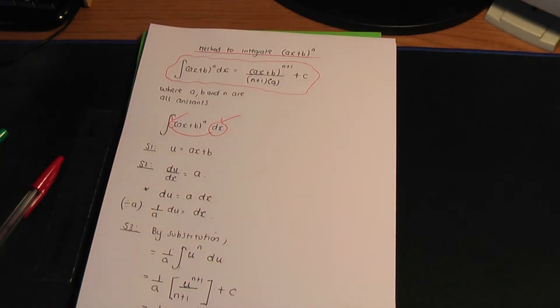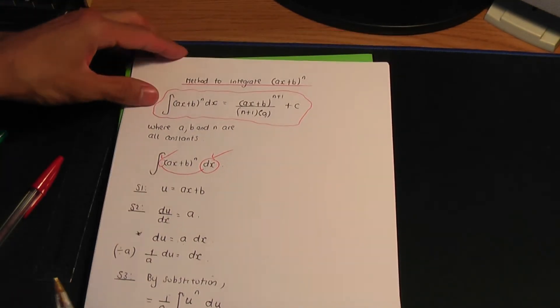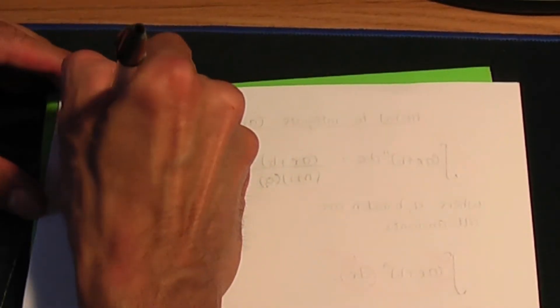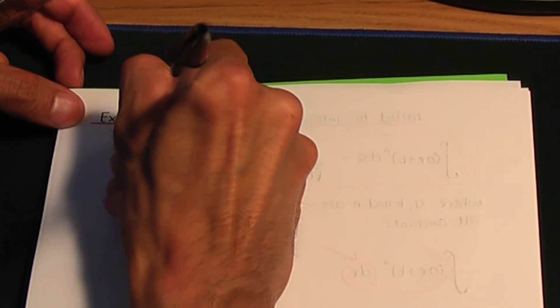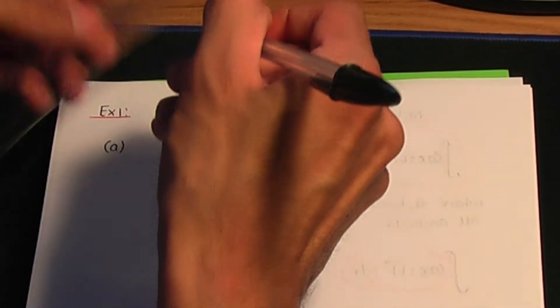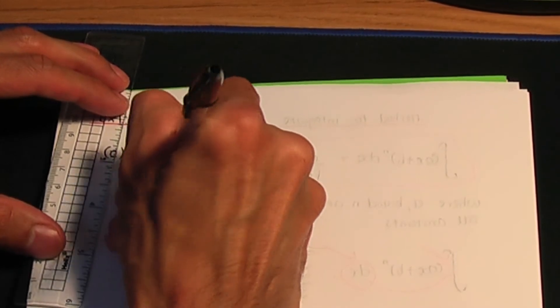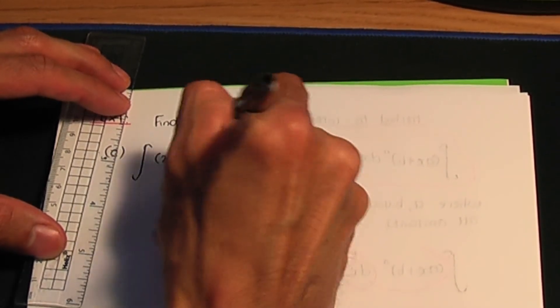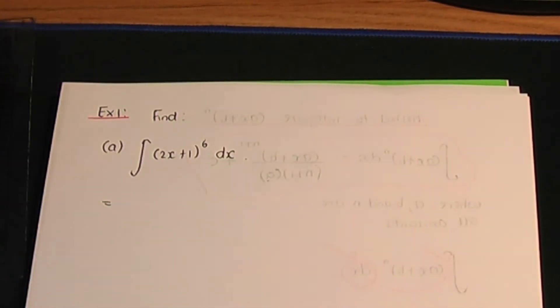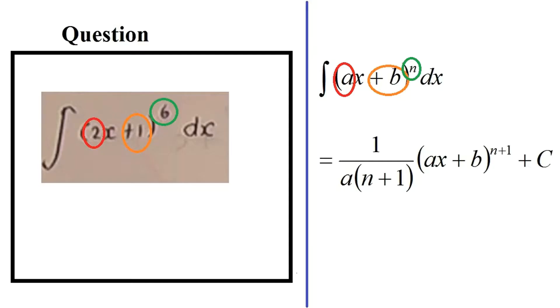Let me show you how this result is applied by taking some examples. Example 1, part a: let's integrate 2x plus 1 to the power of 6. We can apply that result because 2x plus 1 is in the form ax plus b to the power of n.